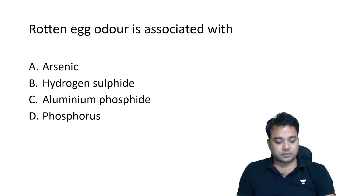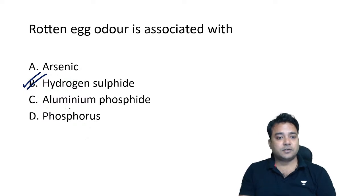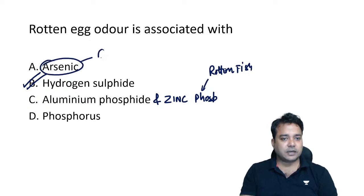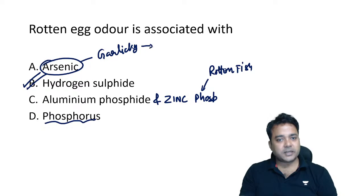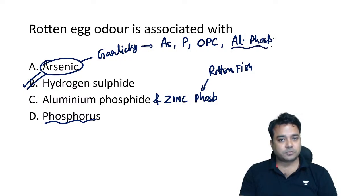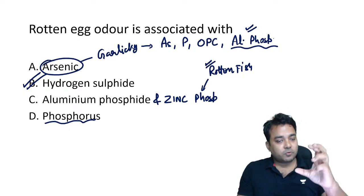Rotten egg odor is associated with hydrogen sulfide. Rotten fish odor is associated with aluminum phosphide and zinc phosphide. The odor of arsenic is garlicky, also seen in phosphorus poisoning. Garlicky odor has many differentials: arsenic, phosphorus, organophosphorous compounds, and aluminum phosphide. Aluminum phosphide gives two types of odors — garlicky as well as rotten fish-like.